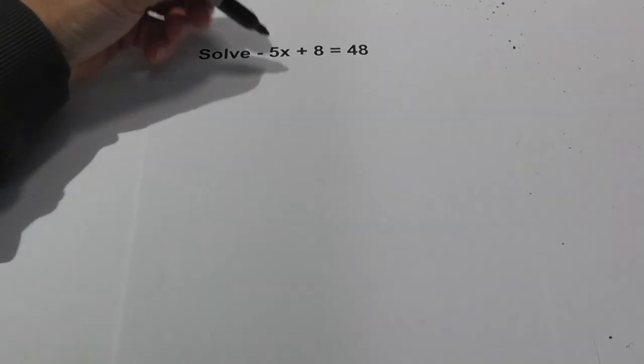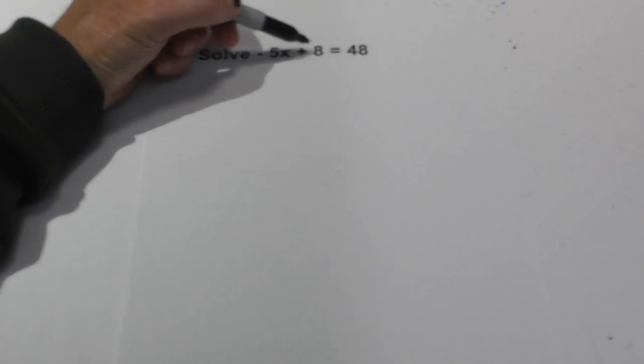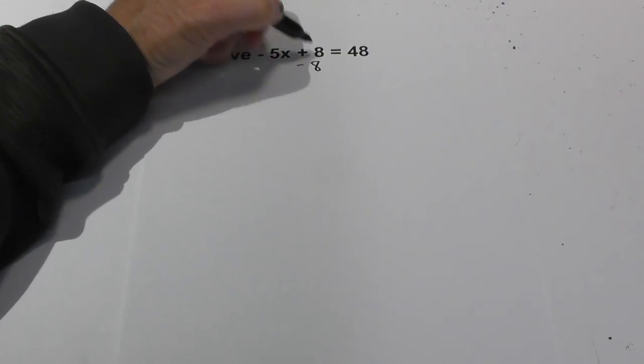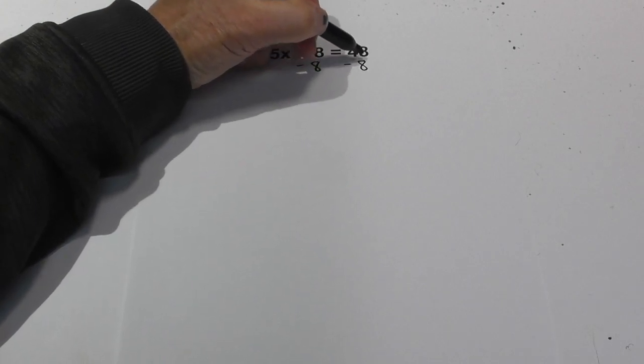So let's begin with addition and what we need to do is an opposite operation. So we will subtract 8 from both sides.